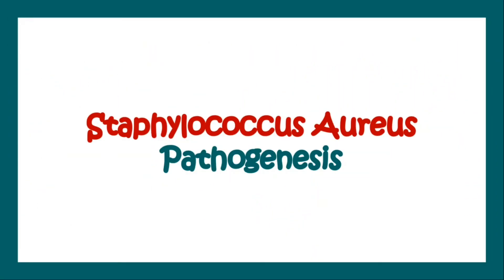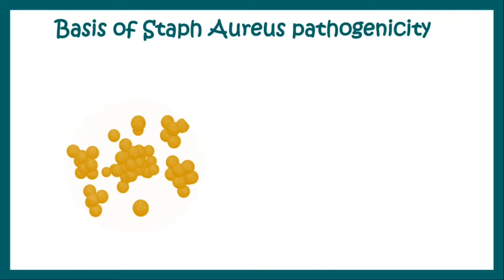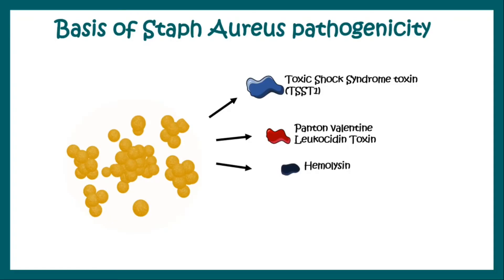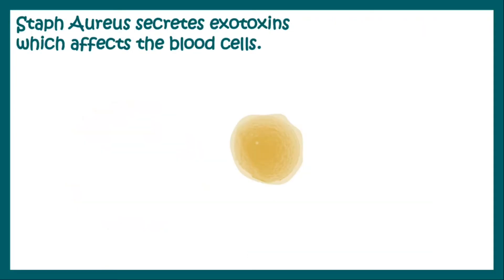Let us come to the pathogenesis of Staphylococcus aureus. The basis of pathogenicity lies in the toxins it produces, including the Toxic Shock Syndrome toxin 1, the Panton-Valentine Leukocidin toxin, Hemolysin, the Exfoliating toxin, and Enterotoxin.